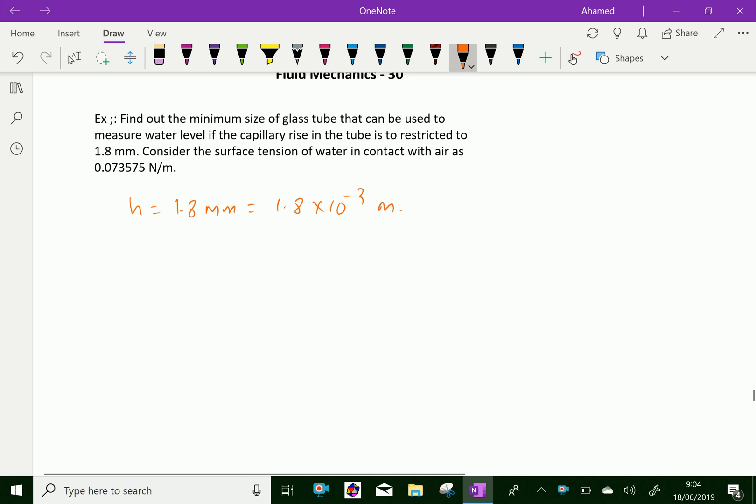Now, surface tension sigma is given as 0.073575 newton per meter.